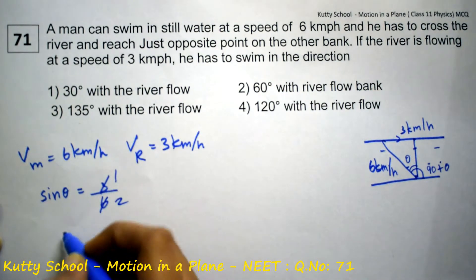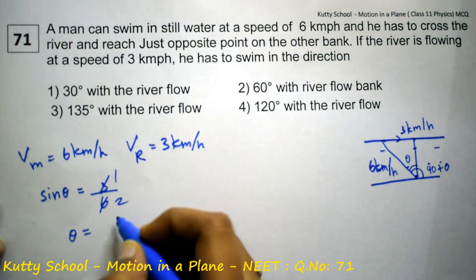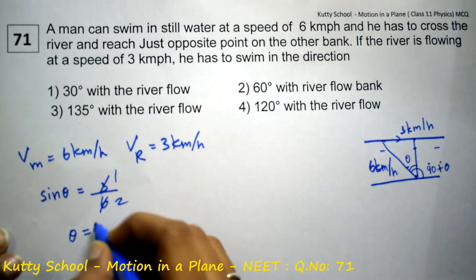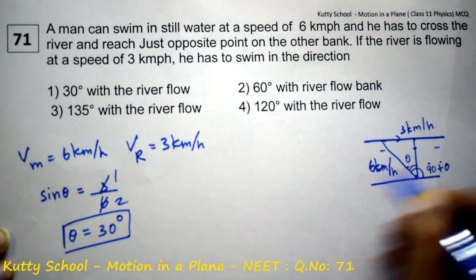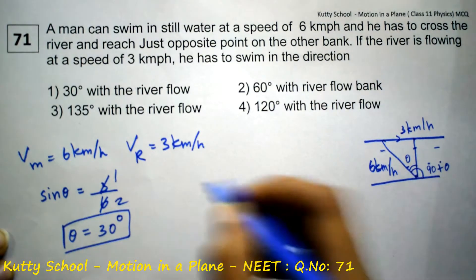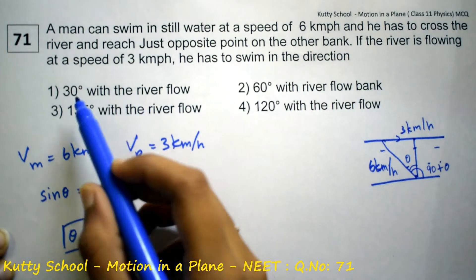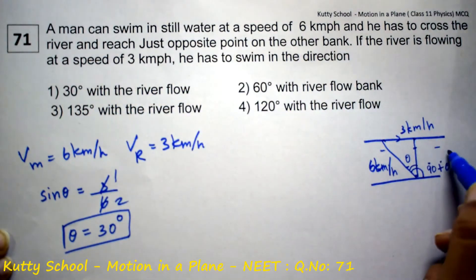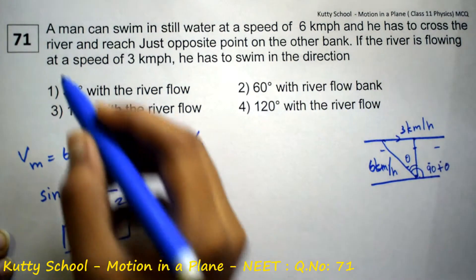That gives 1 by 2, so theta is equal to 30 degrees. With theta as 30 degrees, he can reach the opposite point. So 30 degrees with the river flow — the river flow is here, and 30 degrees with the river flow.